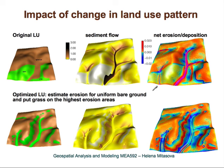Here is a simulation of the impact of a change in land use pattern. With the original land use, protective grass was placed on steep hillslopes. However, even with this protection, a lot of sediment comes out, and gully problems were quite common during very strong storms. The sediment flow and net erosion-deposition pattern show relatively low erosion in the grassy area, higher erosion in bare or agricultural areas, and very high erosion due to concentrated flow in certain zones.